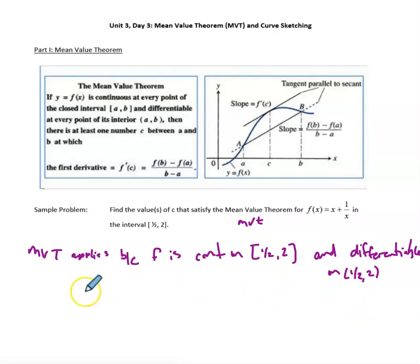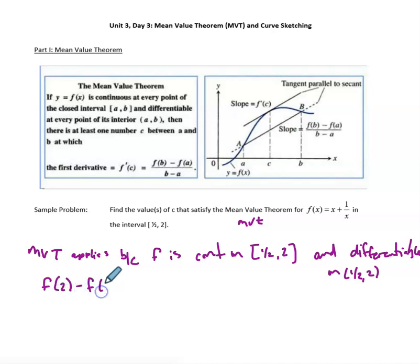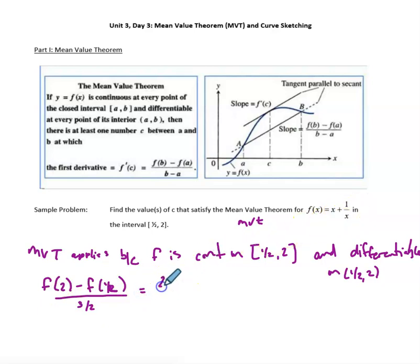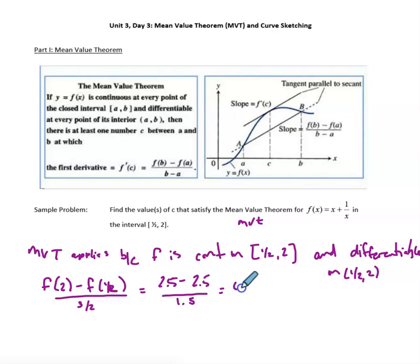Now we find the average rate of change of f on [1/2, 2]: that's f(2) minus f(1/2), divided by 2 minus 1/2, which is 3/2 in the denominator. f(2) = 2 + 1/2 = 2.5, and f(1/2) = 1/2 + 1/(1/2) = 2.5. The numerator is 0, so the average rate of change is 0.